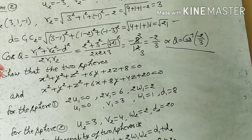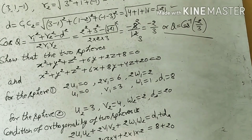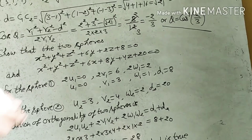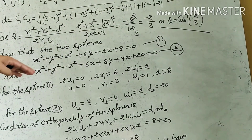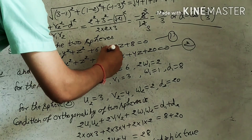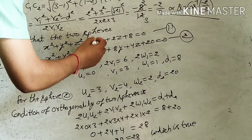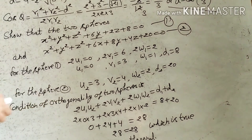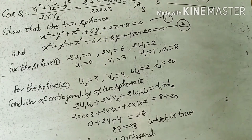Now come to another question: show that the two spheres are orthogonal. The 1st sphere is x² + y² + z² + 6y + 2z + 8 = 0, and the 2nd sphere is x² + y² + z² + 6x + 8y + 4z + 20 = 0. From the 1st sphere: there is no x term so U1 = 0; 2V1 = 6 so V1 = 3; 2W1 = 2 so W1 = 1; D1 = 8. From the 2nd sphere: U2 = 3, V2 = 4, W2 = 2, D2 = 20.